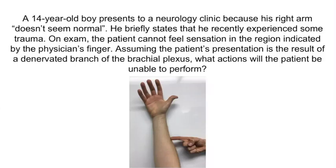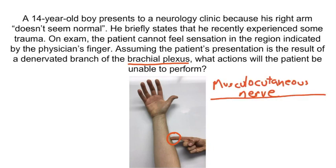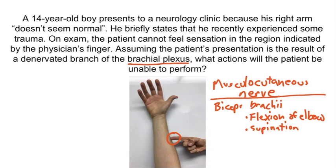A 14-year-old boy presents to a neurology clinic because his right arm doesn't seem normal following some trauma. On exam, the patient cannot feel sensation in the region indicated by the physician's finger. Assuming the presentation results from a denervated branch of the brachial plexus, what actions will the patient be unable to perform? The nerve to think of is the musculocutaneous nerve. It innervates the biceps brachii, which performs flexion of the elbow and supination of the forearm. With damage to the musculocutaneous nerve, there will be no elbow flexion or forearm supination — these are the actions the patient cannot perform.